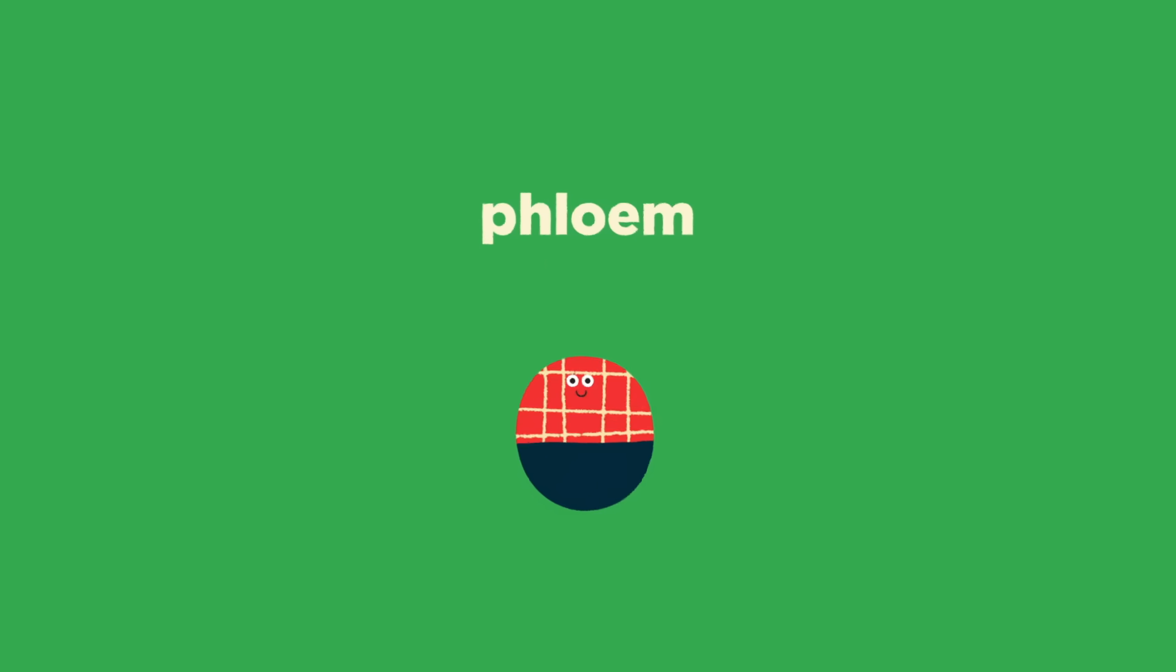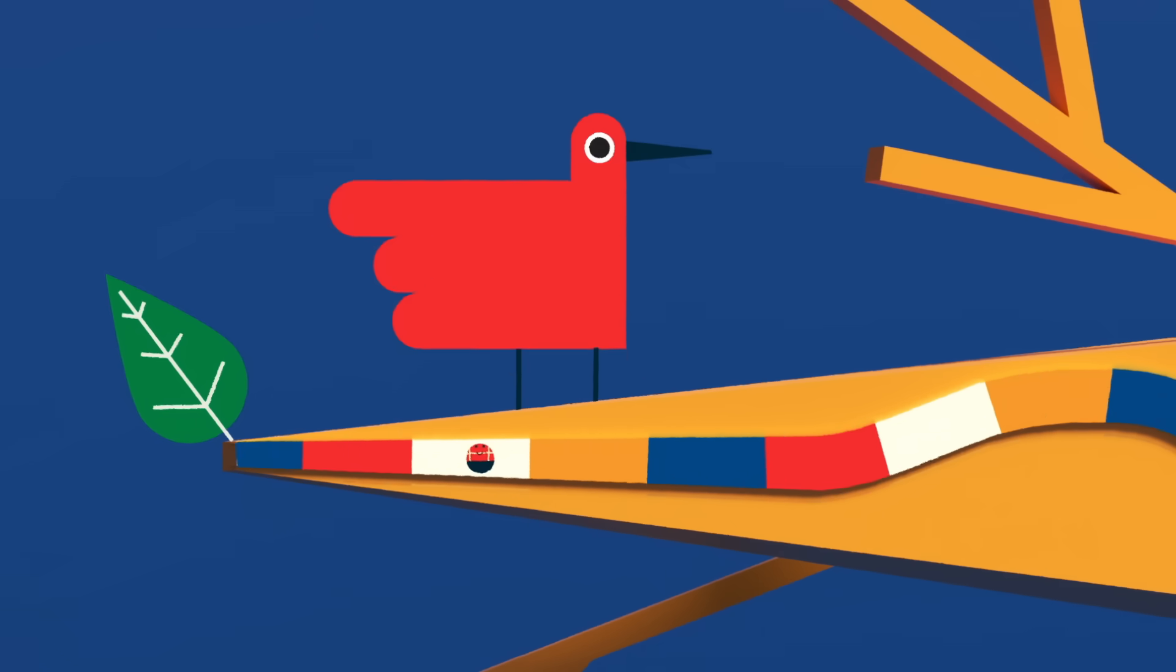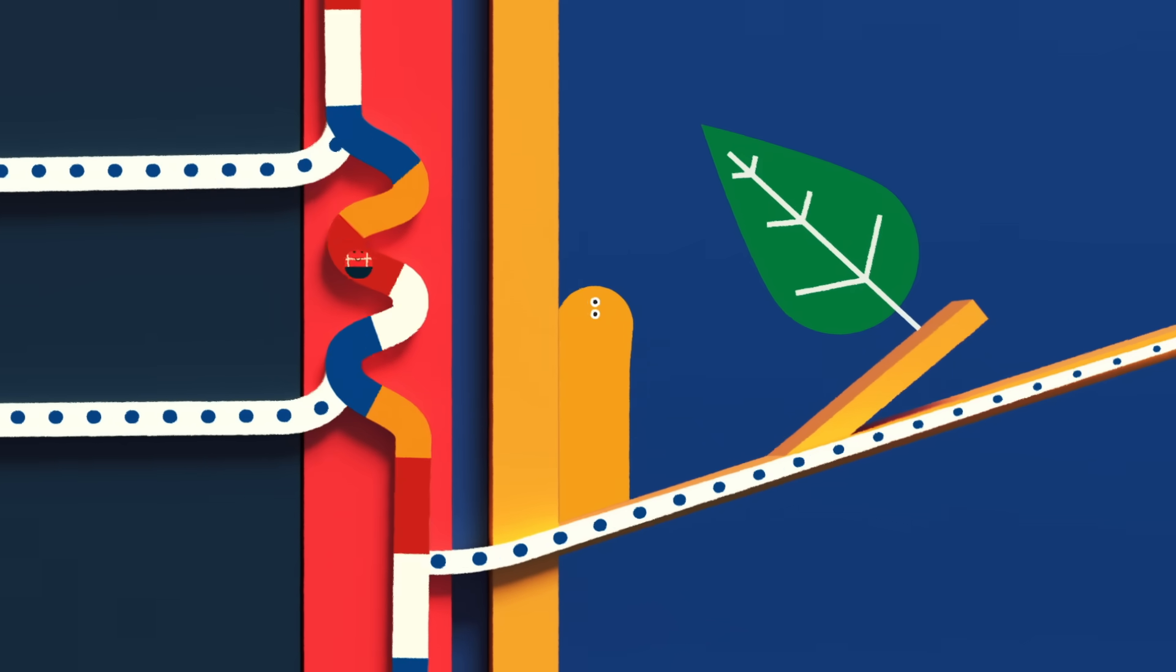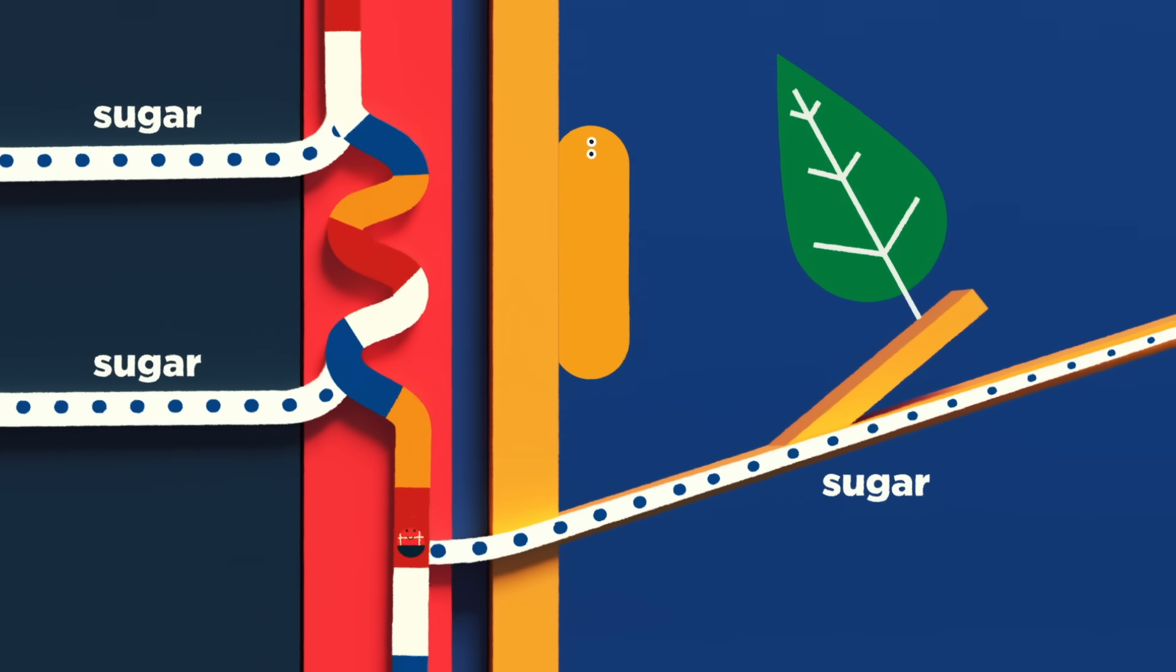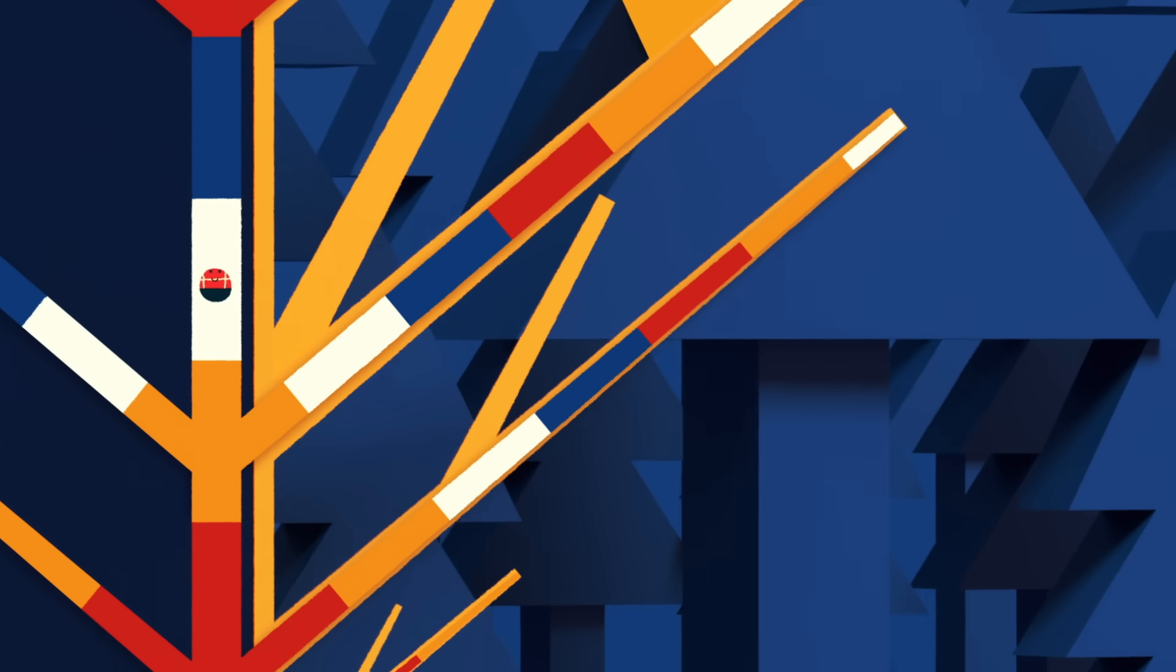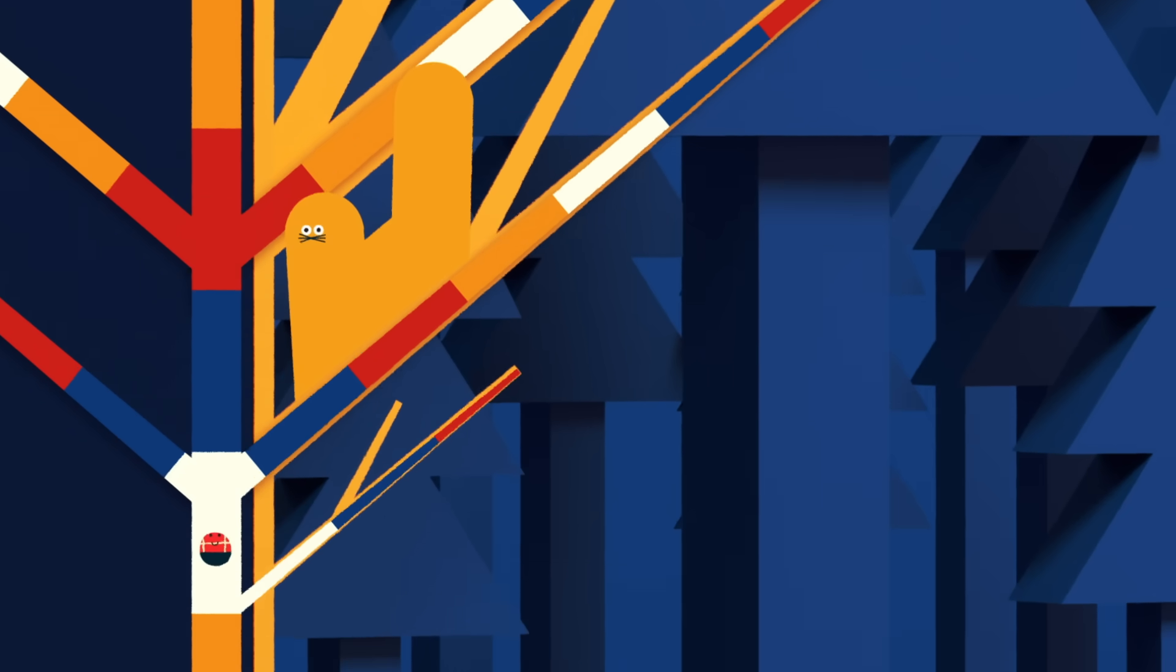The first is phloem sap. Containing the sugars generated in leaves during photosynthesis, phloem sap is thick, like honey, and flows down the plant's phloem tissue to distribute sugar throughout the tree. By the end of its journey, the phloem sap has thinned into a watery substance, pooling at the base of the tree.